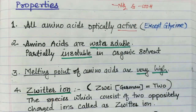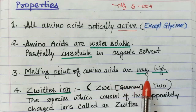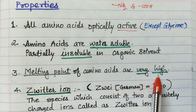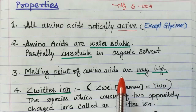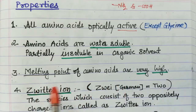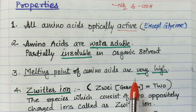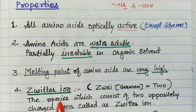Third property: the melting point of amino acids is very high compared to carboxylic acids and amines, because carboxylic acids and amines have low melting points compared to amino acids. The melting points of amino acids are very high and often decompose at their melting point.